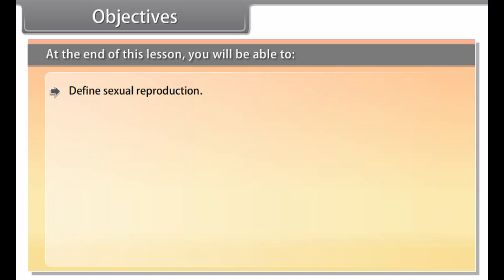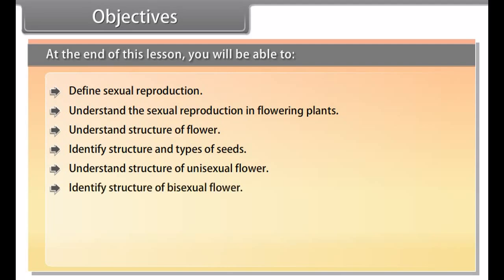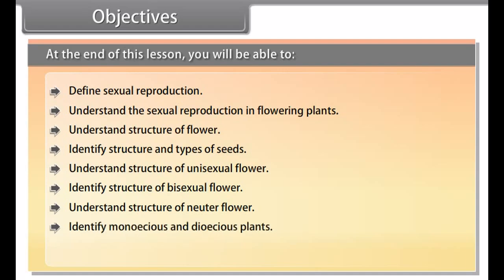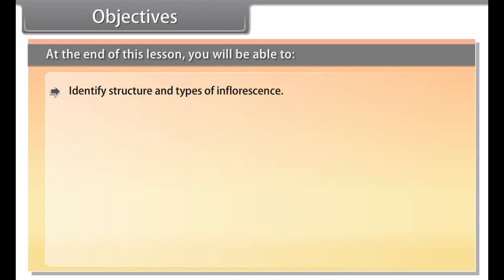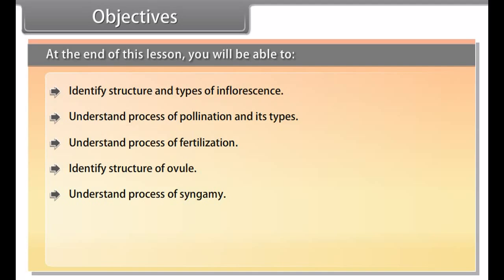At the end of this lesson, you will be able to: define sexual reproduction; understand sexual reproduction in flowering plants; understand the structure of a flower; identify structure and types of seeds; understand the structure of unisexual, bisexual, and neuter flowers; identify monoecious and dioecious plants; understand functions of a flower; identify structure and types of inflorescence; and understand the processes of pollination, fertilization, singamy, triple fusion, and double fertilization.